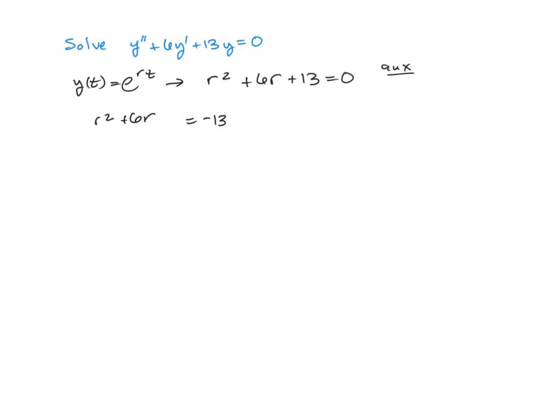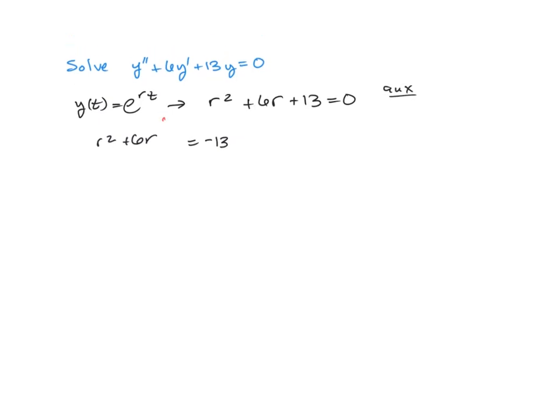Remember, we always take half of that middle number, square it, and add it to both sides. So we're going to take half of 6, which is 3, square 3, which is 9, and add 9 onto both sides of the differential equation.